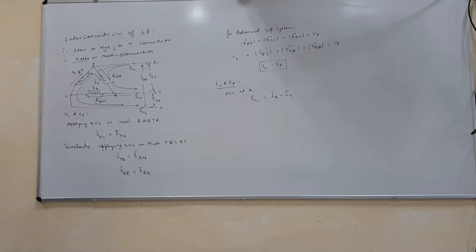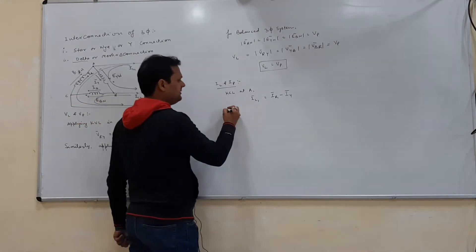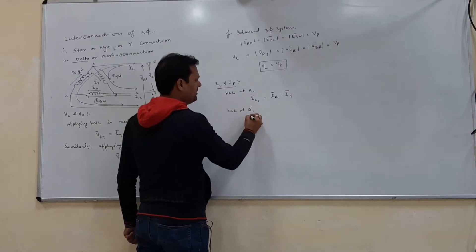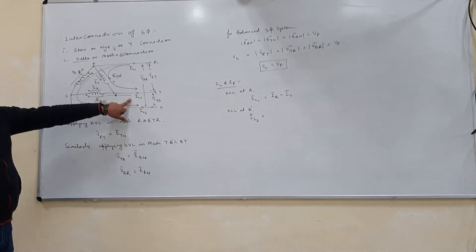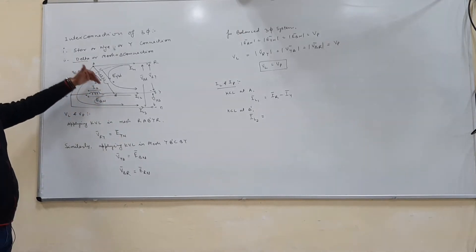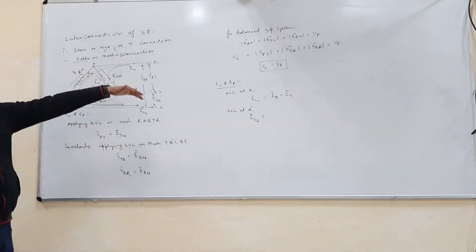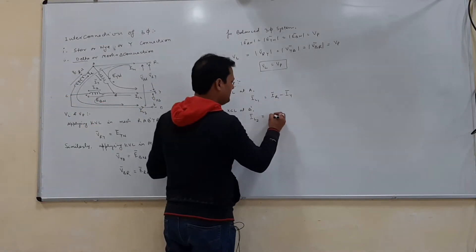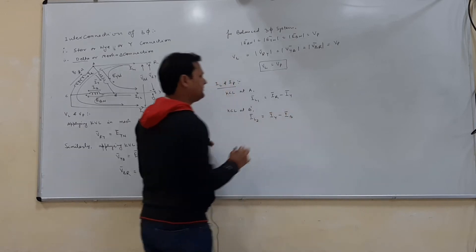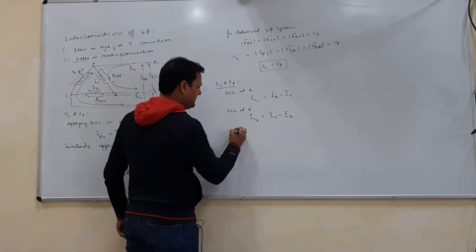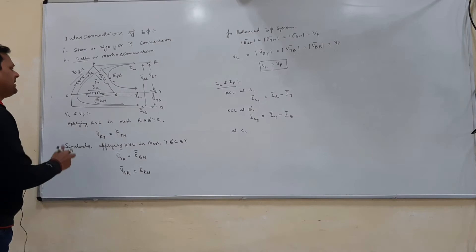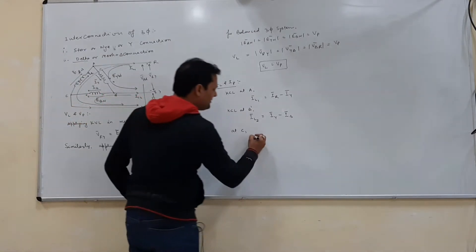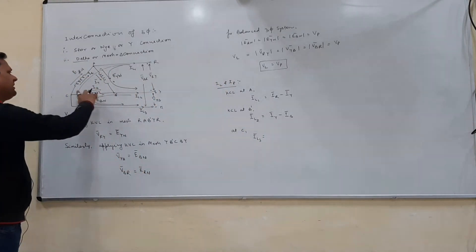Similarly, applying KCL at node B dash: the incoming current is IY, while IL2 and IB are outgoing. So IY minus IB minus IL2 equals zero, giving IL2 equals IY minus IB. And at node C, IL3 equals IB minus IR.